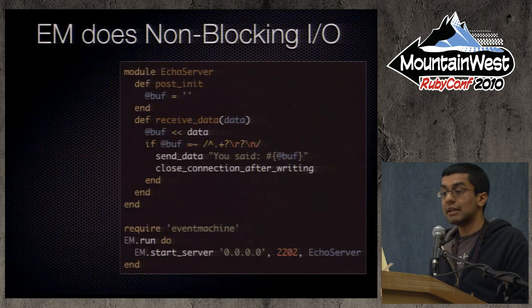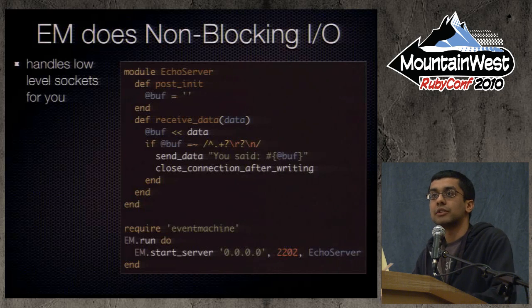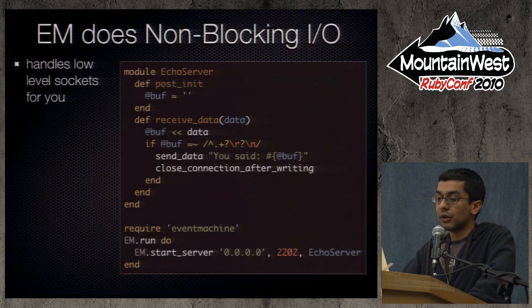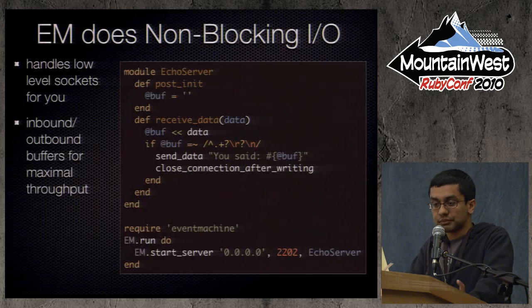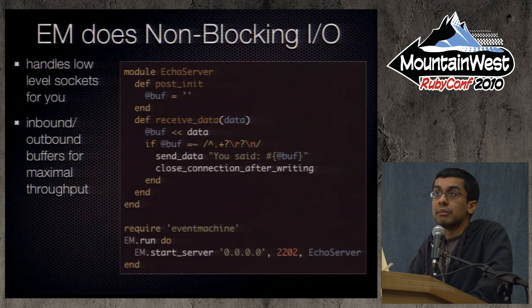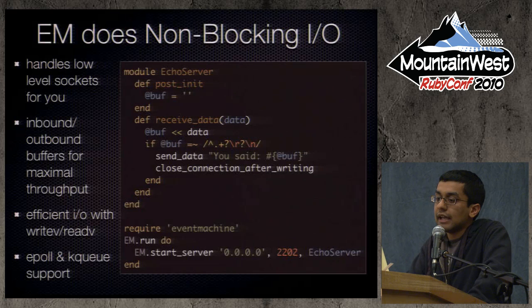This is what EM does — EM does non-blocking I/O, and it takes care of all that boilerplate low-level stuff for you. The code you write is basically just the code that handles parsing out a line and responding. EM manages all those inbound and outbound buffers for maximum throughput, does efficient I/O using certain syscalls when available, and has epoll and kqueue support.